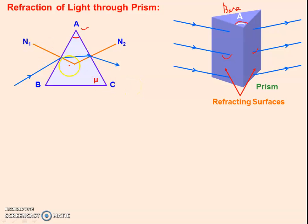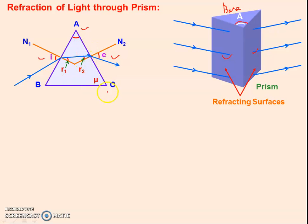Now we are drawing the normals. This is the angle of incidence for the first surface and this is the angle of refraction R1. This is the angle of incidence at the second surface and this one is the angle of refraction. This angle is called angle of incidence, and this is called angle of emergence. The angle R1 is the angle of refraction at the first surface, and R2 is the angle of incidence for the AC surface.